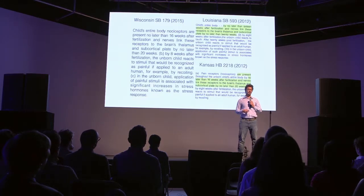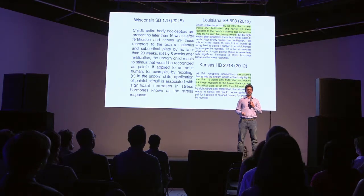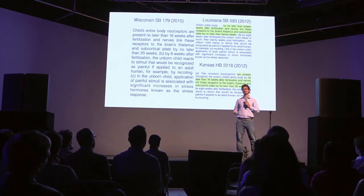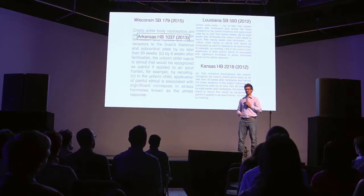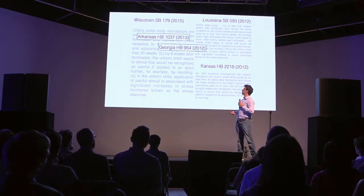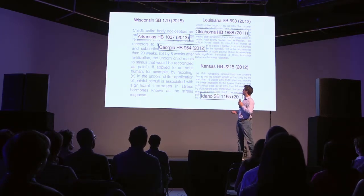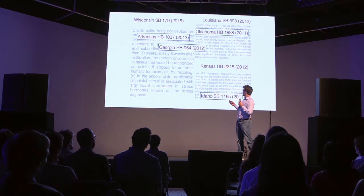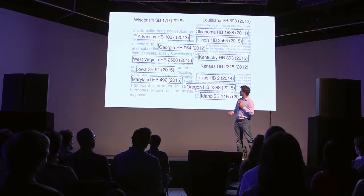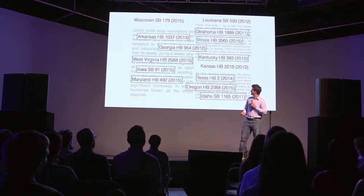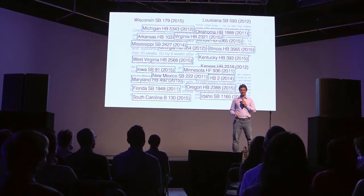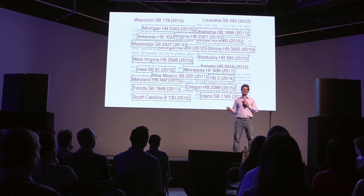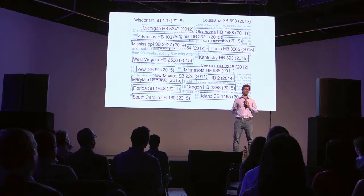To test the usefulness of our system, we inserted the Wisconsin bill into LID and quickly found that there are many other states with similar bills — Arkansas, Georgia, Idaho, Iowa, and so on. We found, in a matter of minutes, that there are 41 other states with similar bills.